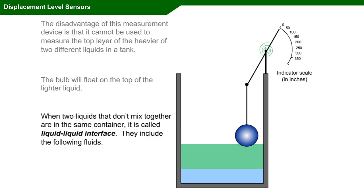When two liquids that don't mix together are in the same container, it is called liquid-liquid interface. They include the following fluids: oil and water, specific chemicals, and slurries.